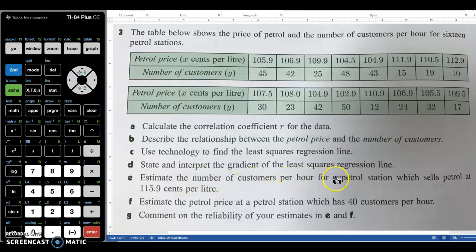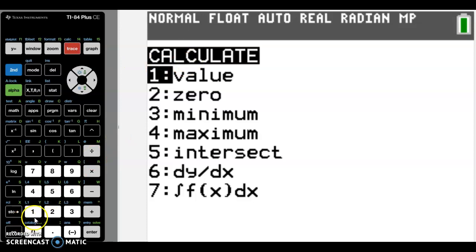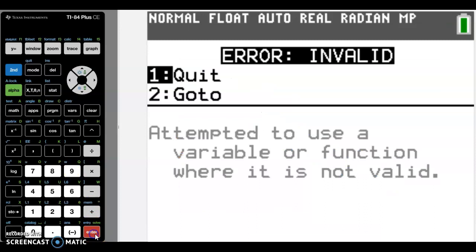Now, estimate the number of customers per hour for 115.9 cents. So back to graph again. So 115.9. Which is my price? So we could go to trace and just get an idea that the X is the price. So to do that, the easiest way is to go into Calc, into Value, and do 115.9. We can see that it gives us error.